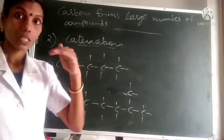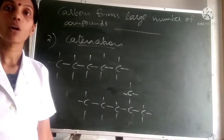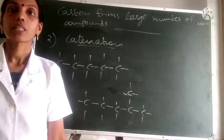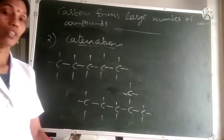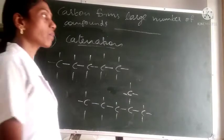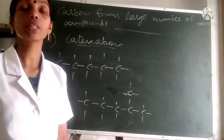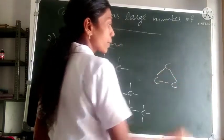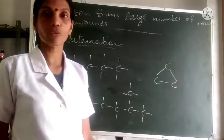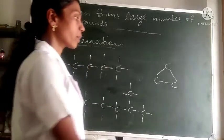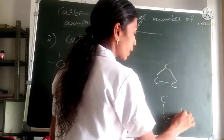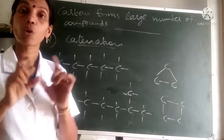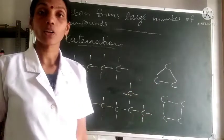Sometimes carbon atoms are arranged in a straight line — those are straight chain compounds. In some compounds, carbon atoms may be arranged as branches in the straight chain — those are branched chain compounds. And sometimes, carbon atoms will be arranged in the form of a cycle, meaning a closed figure. If only three carbon atoms are there, they will be arranged like a triangle. If four carbon atoms are there, they can be arranged in the form of a square. Such carbon compounds, where atoms form closed figures, are known as cyclic compounds.